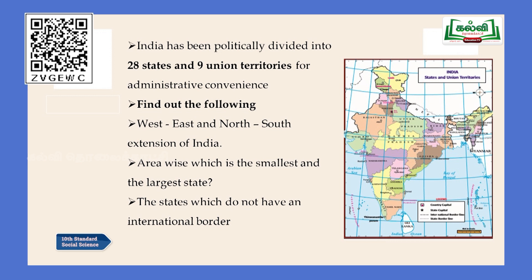India has been politically divided into 28 states and 9 union territories for administrative convenience. There are also two main groups of islands: Andaman and Nicobar Islands, which lie in the Bay of Bengal, and Lakshadweep Islands, which lie in the Arabian Sea.